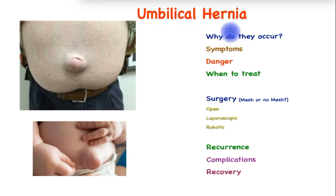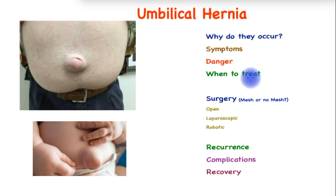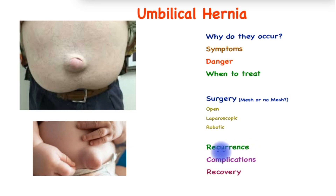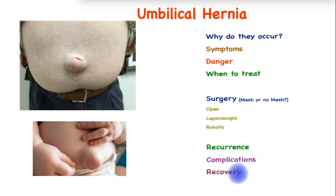In this video, we will learn about umbilical hernia: why do they occur, what are the symptoms, what are the dangers, when they should be treated, what kind of surgery is offered to these patients, what's the risk of recurrence, and what are the complications or risk of complications.